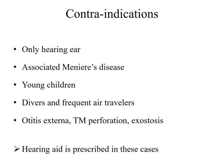Contraindications for stapedectomy or stapedotomy include: only one hearing ear; associated Meniere's disease; young children, as they have recurrent upper respiratory tract infections or Eustachian tube dysfunction which can lead to displacement of the prosthesis; divers and frequent air travelers who have difficulty sustaining the prosthesis. Relative contraindications include otitis externa, tympanic membrane perforation, exostosis, or any external auditory canal disease. In these cases, a hearing aid is usually prescribed.